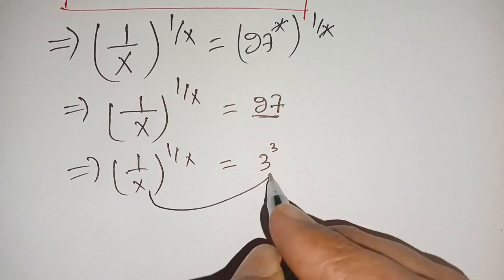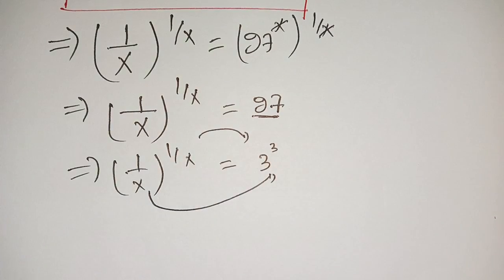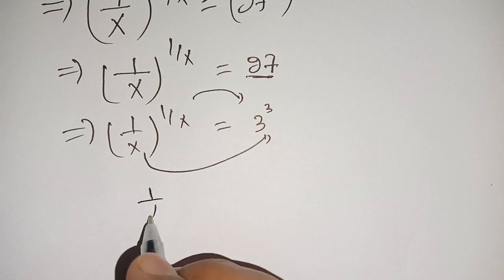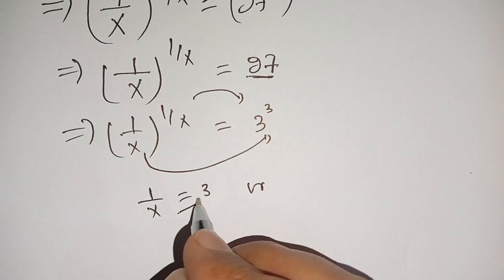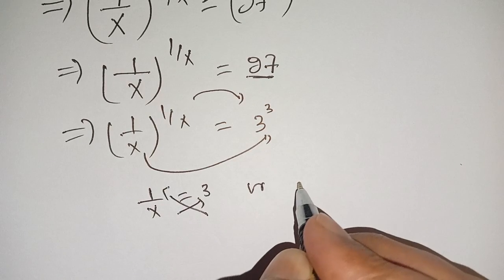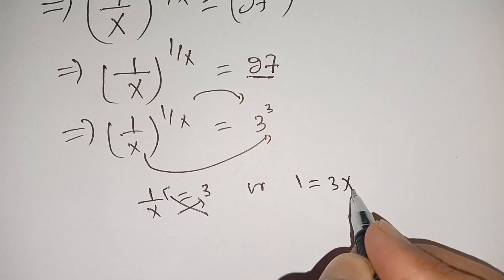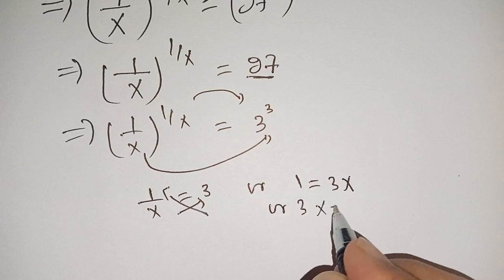Now we can compare either base to base or power to power. We get 1 divided by x is equal to 3. Or on cross multiplication, we get 1 is equal to 3x, or 3x is equal to 1.